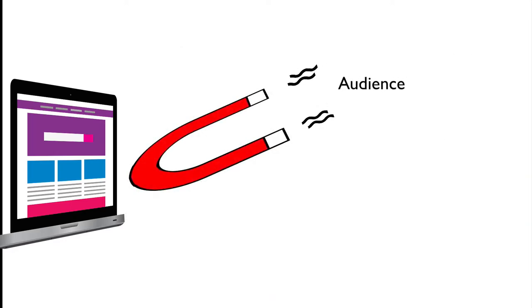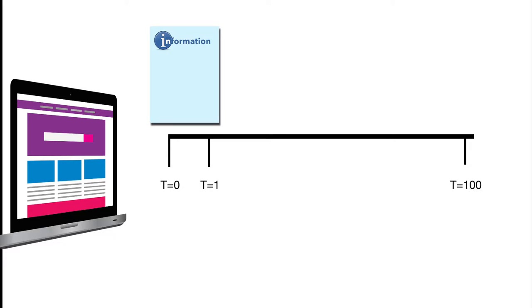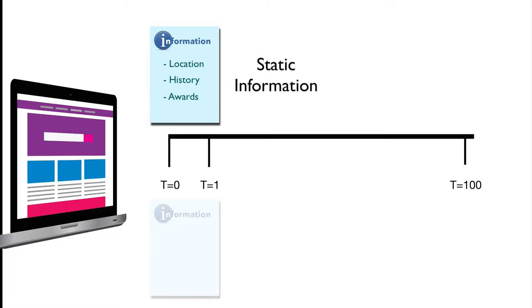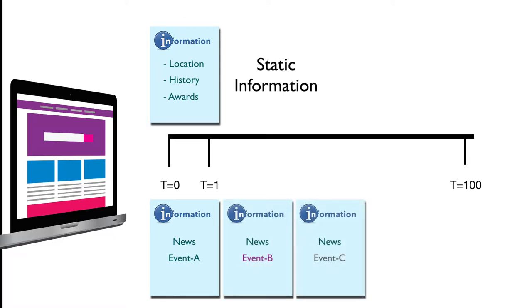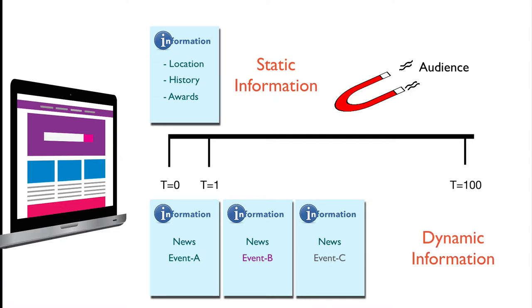Another aspect to consider while designing a website is whether we are pulling our audience to the information or pushing the information to the audience. Information that is not going to change over time — like the location of our school, its history, past achievements — is called static information. Information that changes often, like weekly news about events in our school, is called dynamic information. We can put static information on our website and pull our audience, and we can push dynamic information to our audience using, say, a monthly newsletter emailed to all students and parents.